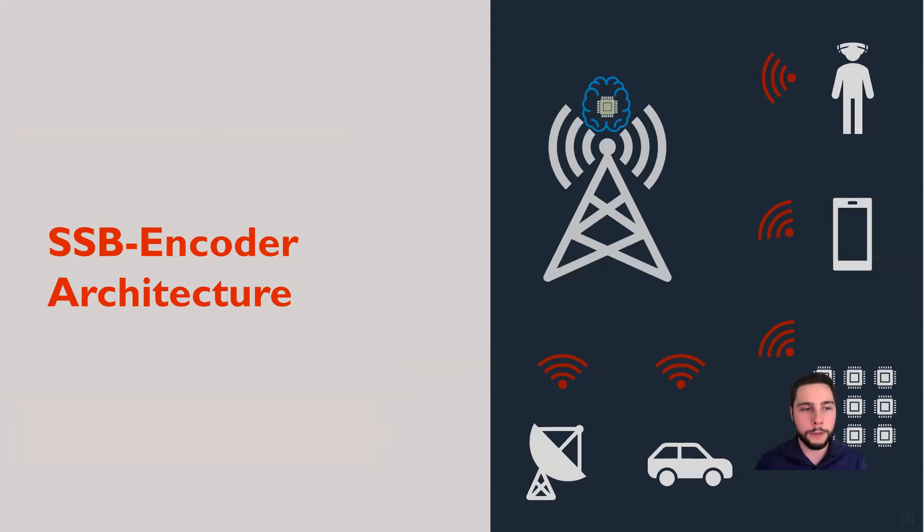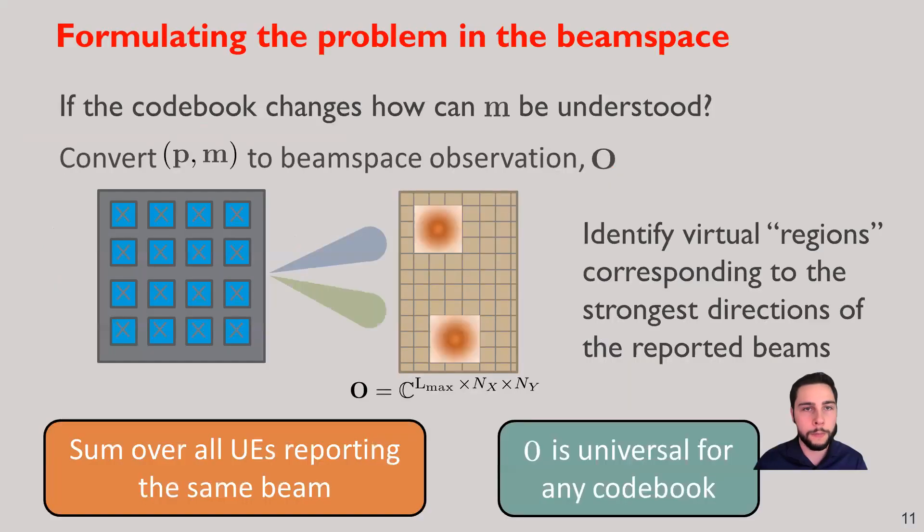This brings us to our proposed solution, which we call the SSB encoder, and this is based on a neural network architecture. But first, we need to format the problem in an informative way, and particularly in the beam space. The key question to ask is, if the codebook were to change from one step to the next, how can you understand what the SSB index means? If beam 1 changes from step to step, then there's no understanding of what beam 1 being the strongest means. So, instead, what we're going to do is convert the channel quality index, the RSRP, and the index to the beam space.